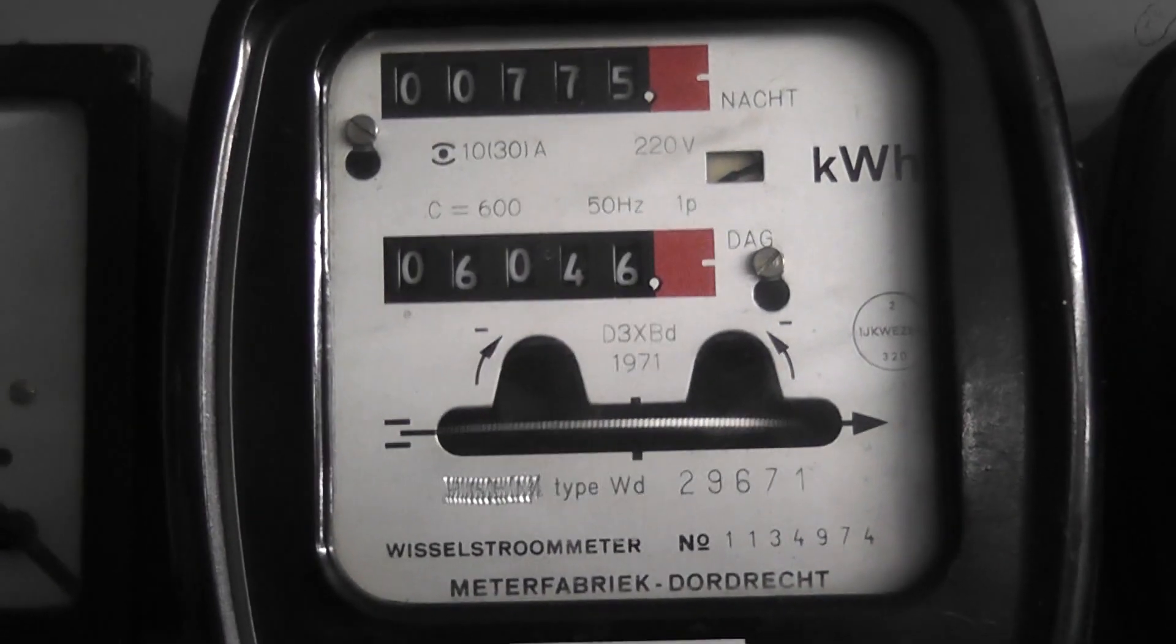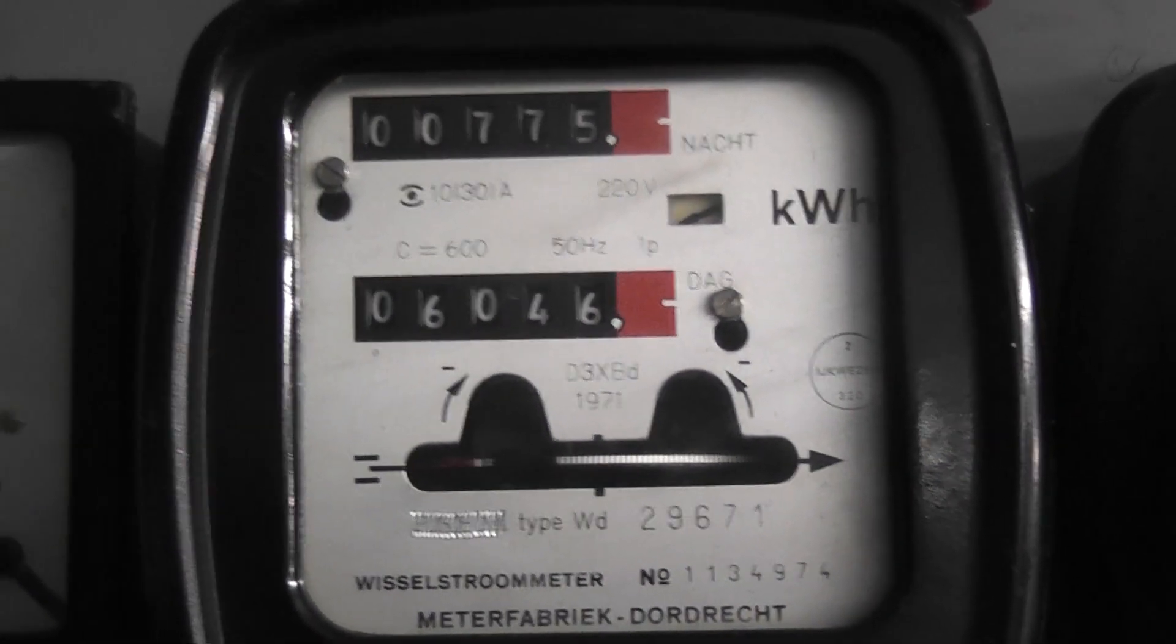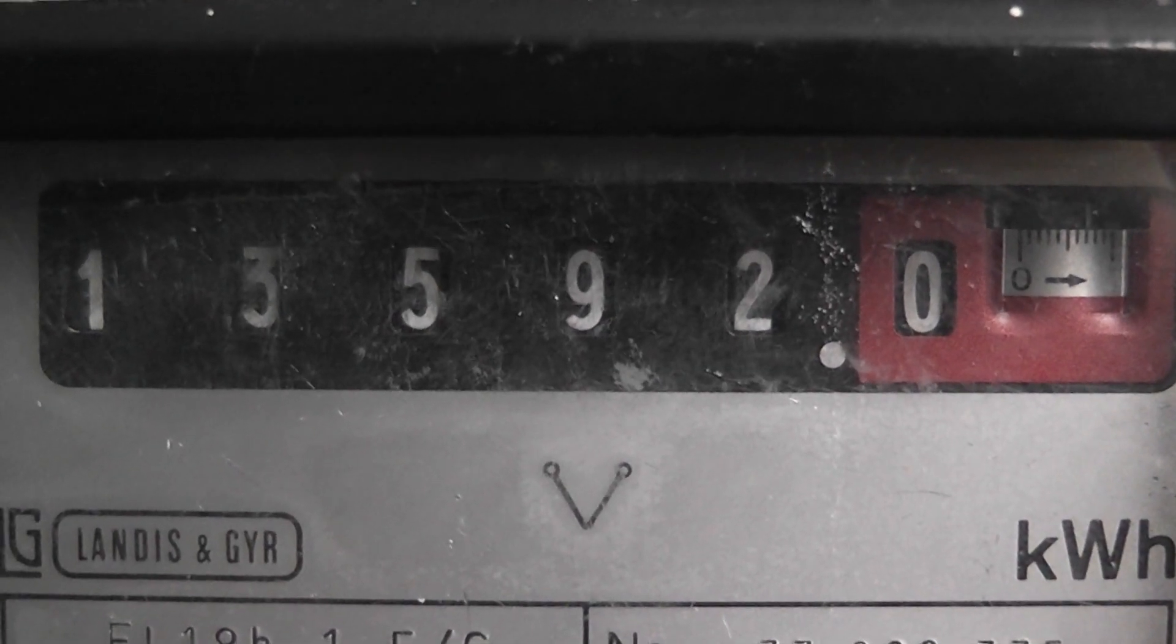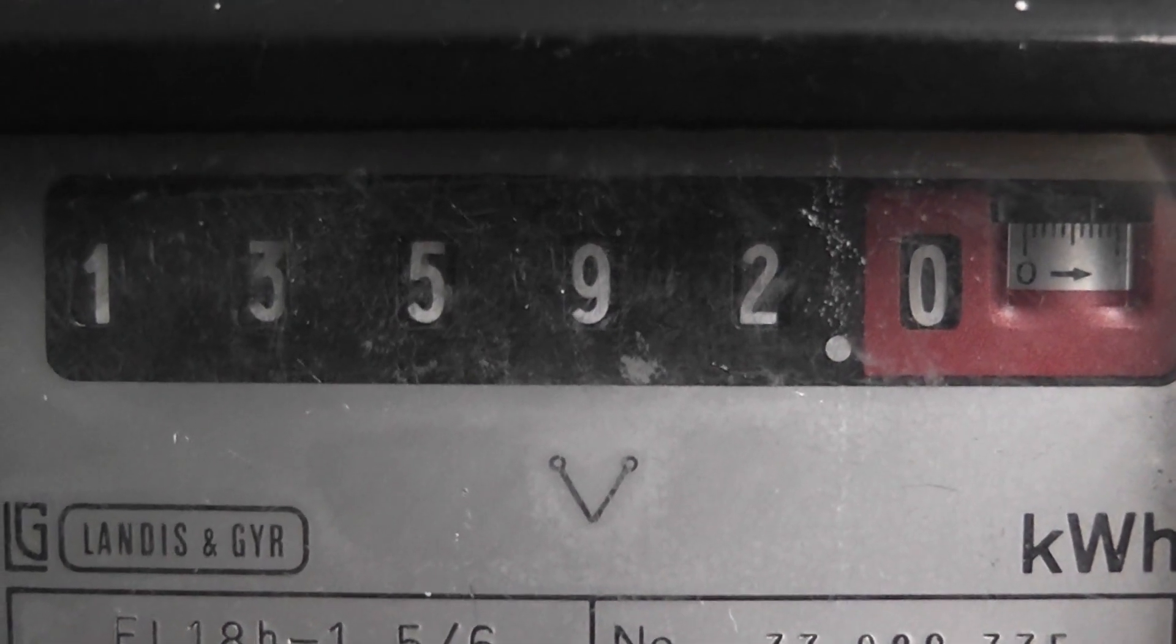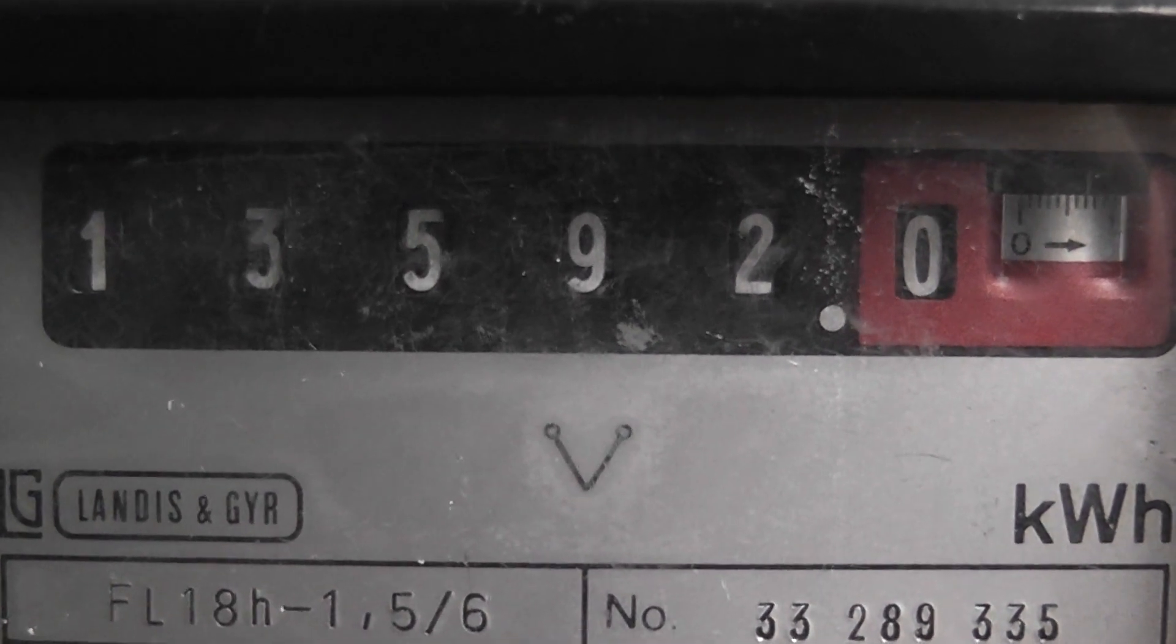Low F1 meter is that one. 06046 and 775 kWh. I need to clean the glass a bit better. One three five nine two horizontal number drums.